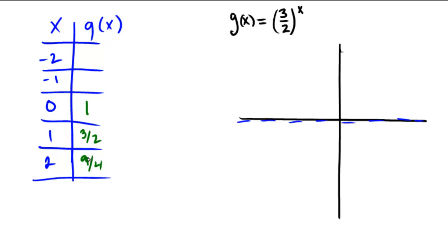Negative values, reciprocals. So negative 1 gives me 2 thirds, and negative 2 gives me 4 ninths.